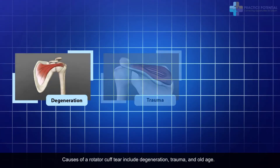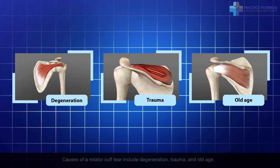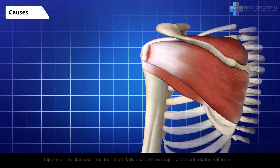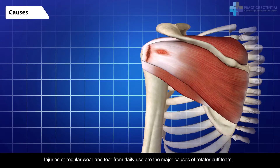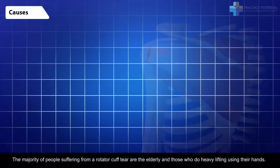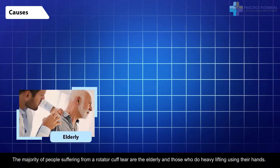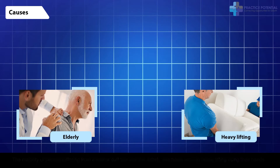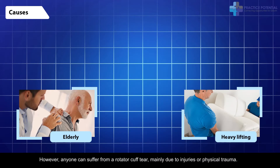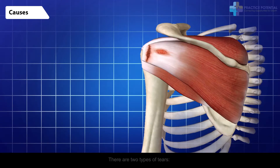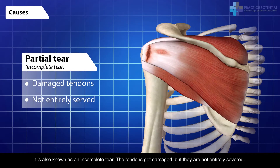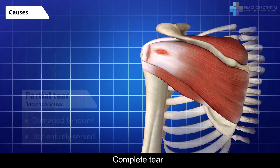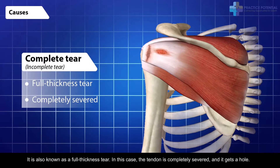Causes of a rotator cuff tear include degeneration, trauma, and old age. Injuries or regular wear and tear from daily use are the major causes. The majority of people suffering from a rotator cuff tear are the elderly and those who do heavy lifting. However, anyone can suffer from a rotator cuff tear, mainly due to injuries or physical trauma. There are two types of tears: a partial tear, also known as an incomplete tear, where the tendons get damaged but are not entirely severed; and a complete tear, also known as a full thickness tear, where the tendon is completely severed and gets a hole.